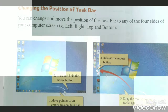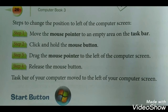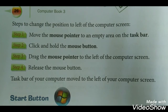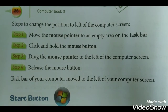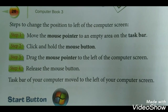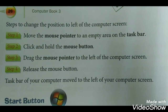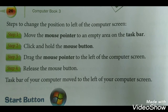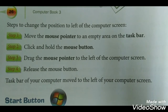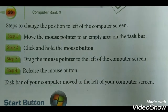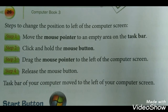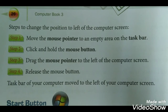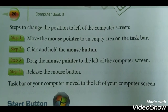Now let's see how you can change the position of the taskbar. Steps to change the position to the left of the computer screen. Step 1: Move the mouse pointer to an empty area on the taskbar. Step 2: Click and hold the mouse button. Step 3: Drag the mouse pointer to the left of the computer screen. Step 4: Release the mouse button.